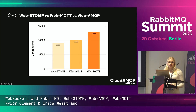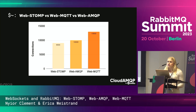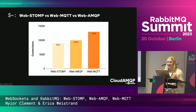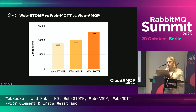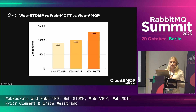This shows the maximum number of connections we could create before servers ran out of resources on the smaller server with four gigabytes of memory. Memory was definitely the bottleneck here — these are the connections we could create before the server started to swap memory. Keep in mind this includes not only the connections but also the equal number of queues and some messages. As expected, WebMQTT can handle more connections than WebSTOMP and WebAMQP: WebMQTT around 13,000, the others nine and ten thousand respectively.